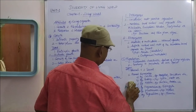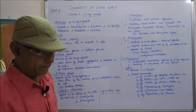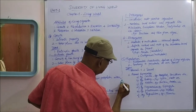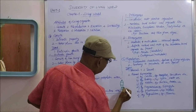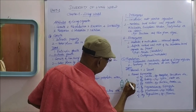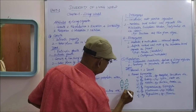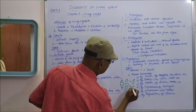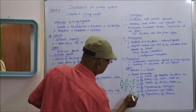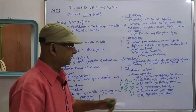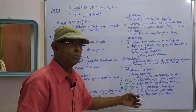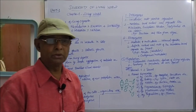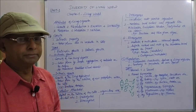The next method is regeneration, seen in the case of Planaria, an animal. The whole animal is cut into a number of segments or parts, and each part will produce the whole organism. There is not much difference between fragmentation and regeneration — fragmentation takes place in plants while regeneration takes place in animals. So those are all the types of asexual reproduction.